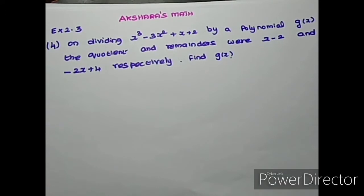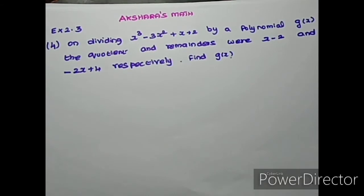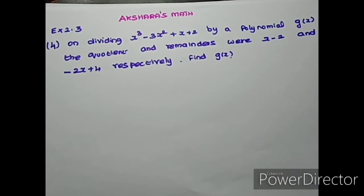Hello all, welcome to Akshira's Math. NCERT exercise 2.3, question 4: On dividing x cube minus 3x square plus x plus 2 by a polynomial g of x, the quotient and remainder were x minus 2 and minus 2x plus 4 respectively. Find g of x.